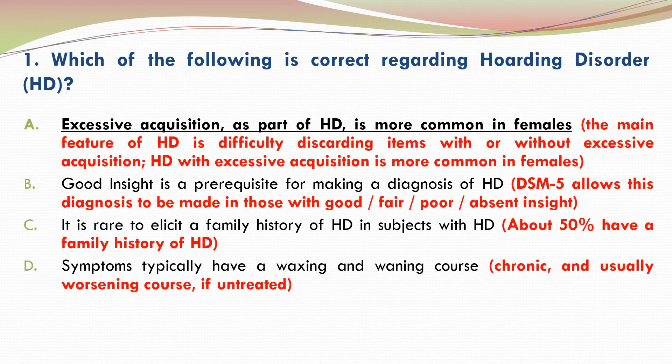B is incorrect. DSM-5 allows this diagnosis to be made in those with good, fair, poor, or even absent insight. C is incorrect because about 50% of individuals with hoarding disorder have a family history of hoarding disorder.